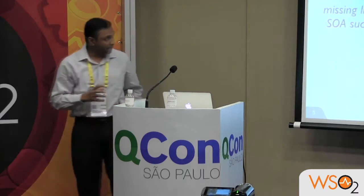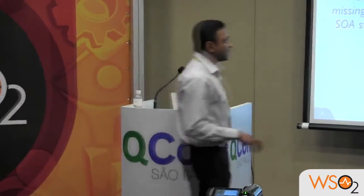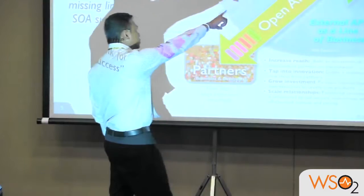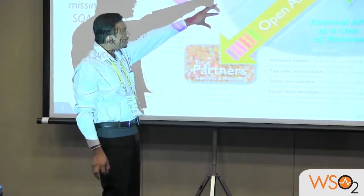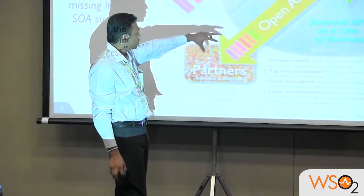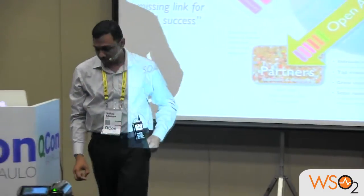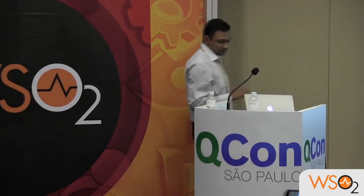This picture simply depicts what I described in my previous slide. You can see that we have business data, and on top of that you can have your services, and those data and services can be exposed through APIs. There are many more attributes attached to the APIs as well.